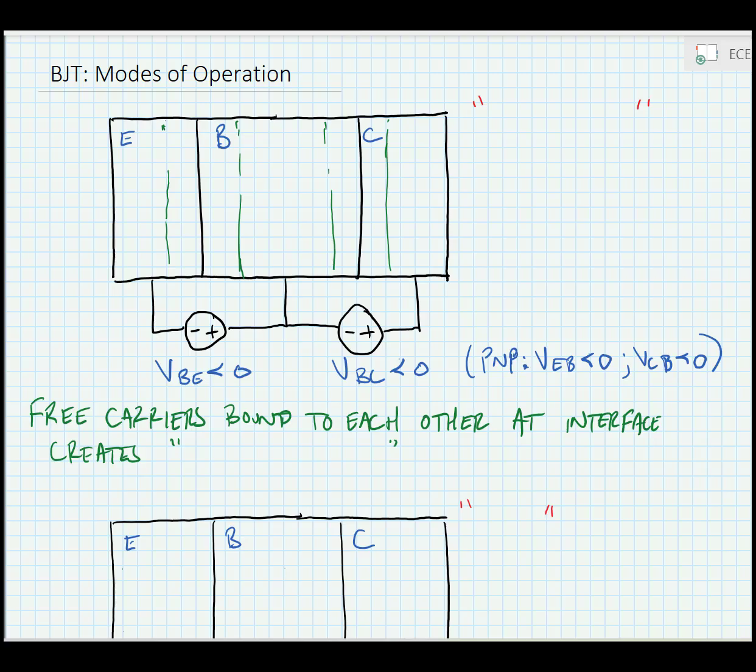Now we're going to discuss the two most important modes of operation for a BJT. The first one happens when the base-emitter junction is less than 0 volts and the base-collector junction is less than 0 volts. In other words, both of the PN junctions are under reverse bias.